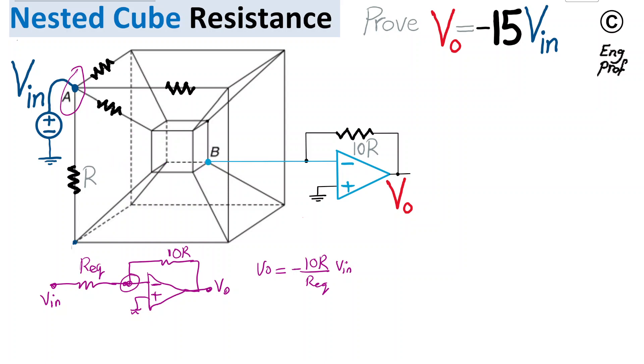Before we proceed with finding R-equivalent, there is a resistor R on every edge of this double-cube. The only reason it is not shown is for clarity so that the figure remains clean, but let's have that in mind.